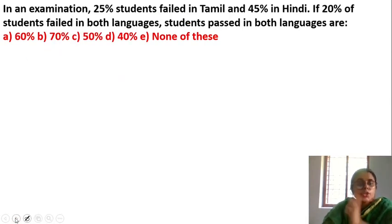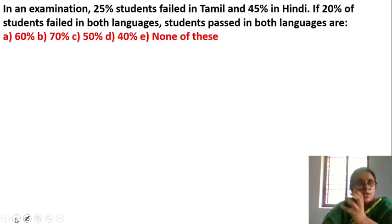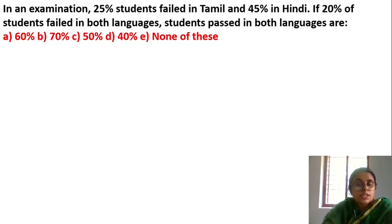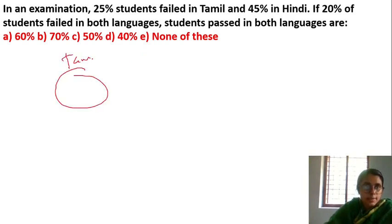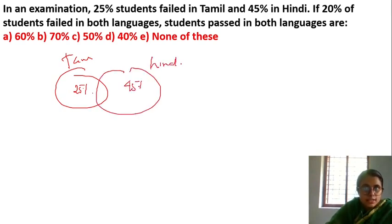Next question: In an examination, 25% of students failed in Tamil and 45% failed in Hindi. If 20% of students failed in both languages, find the percentage of students who passed in both languages. Tamil fail is 25%, Hindi fail is 45%, both fail is 20%.